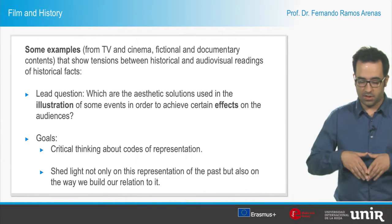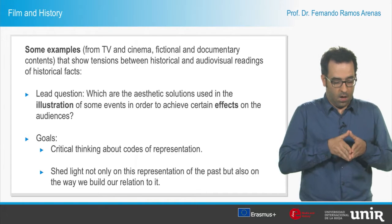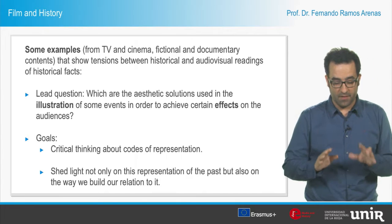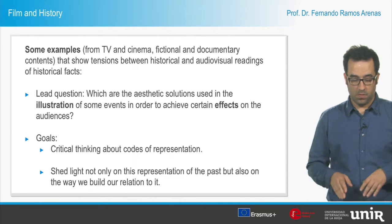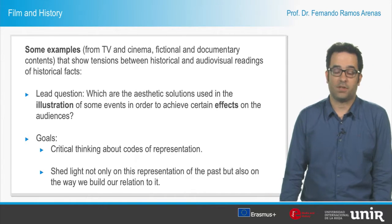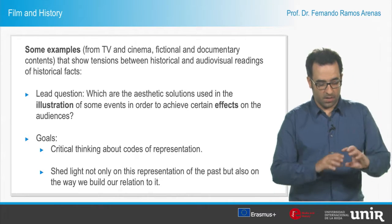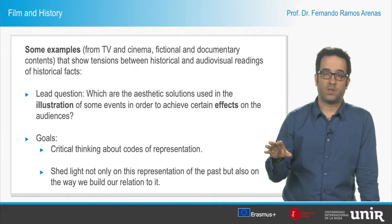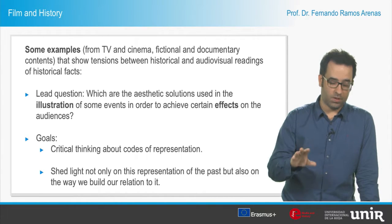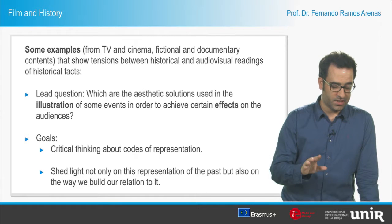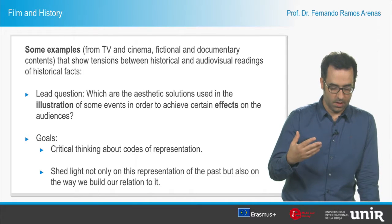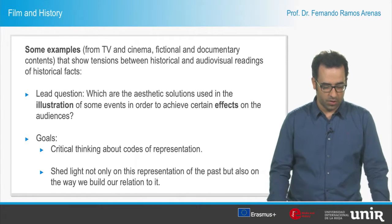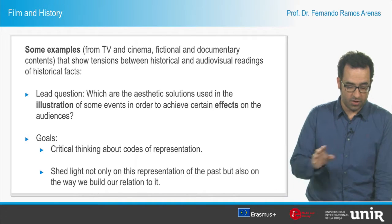Now let me conclude these introductory remarks with some examples of the questions and paradoxes posed by the historical representation of the past. I'm going to refer to three very different audiovisual texts — from television, from cinema, documentary films, but also fiction content — to ask some questions regarding our mediated relationship to the past and to certain historical episodes. My main interest is to highlight the importance of critical thinking about certain codes of representation that influence not only our knowledge of the past, but also the way we build our relation to this past. The focus lies on the aesthetic solutions some audiovisual texts employ to achieve certain effects on spectators.